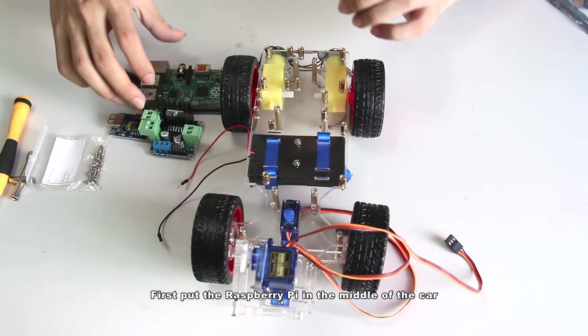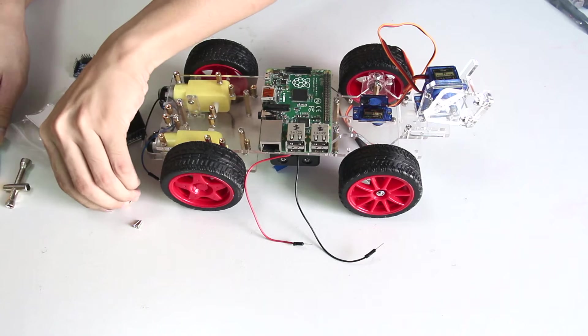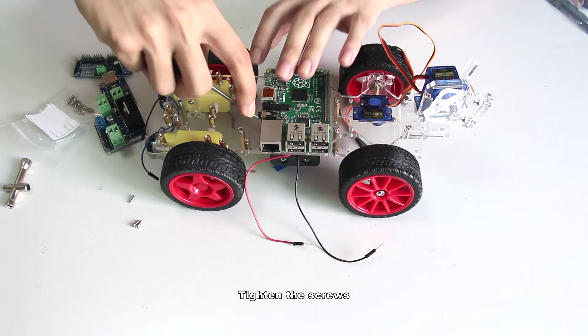First put the Raspberry Pi in the middle of the car. Align the holes on the Pi and the car. Tighten the screws.